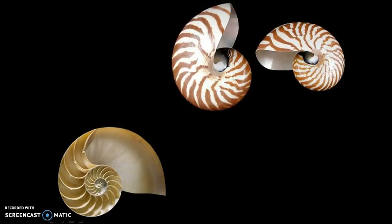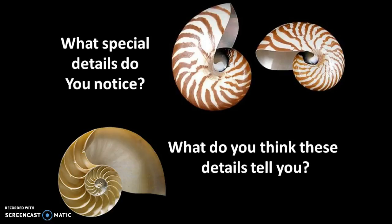Take a look at the pictures. One photo shows whole, unbroken Nautilus shells. The other shows a cross-section of a Nautilus shell, or one that has been cut in half. Pause the video and use the photos to answer the following questions.